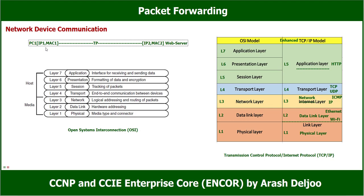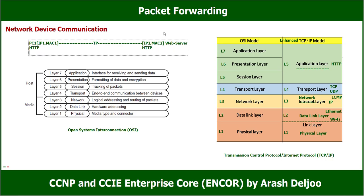We want to send a request from PC1 to the web server. We need an application for communication between PC1 and the web server to receive the web page — that application is HTTP. HTTP is installed and available in both PC1 and the web server via TCP/IP. In PC1 you open your web browser, type the URL or IP address of the web page, and after name resolution with DNS, HTTP creates a GET request for us.